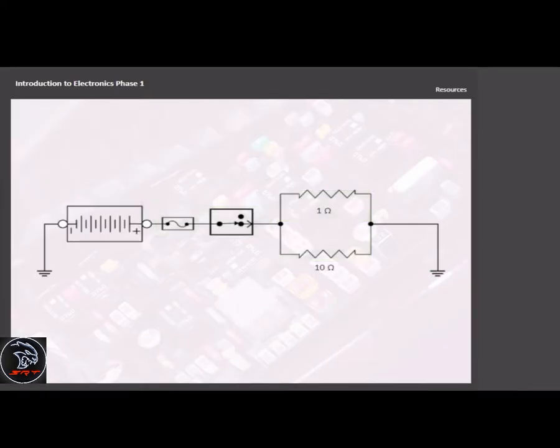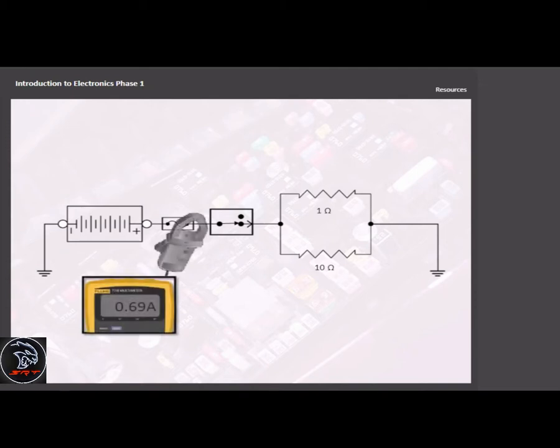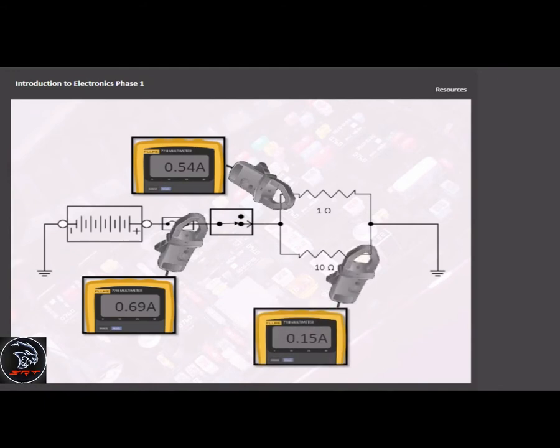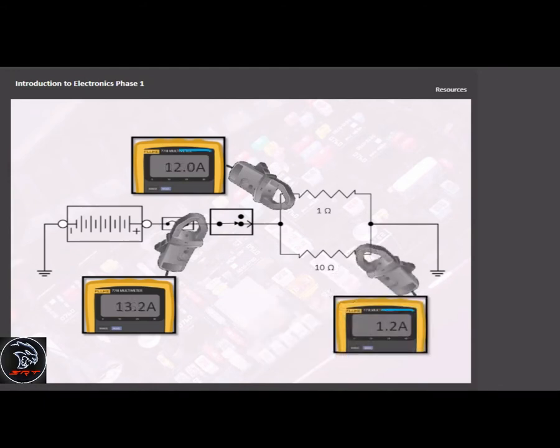Unlike a series circuit, current in a parallel circuit is not the same throughout the entire circuit. The branches and main trunk have different amounts of current flow.